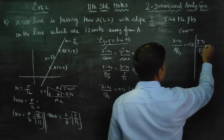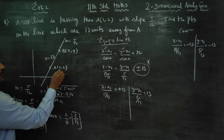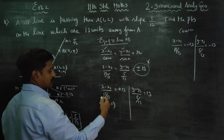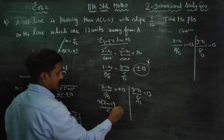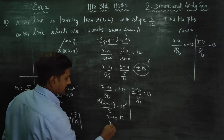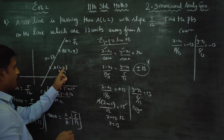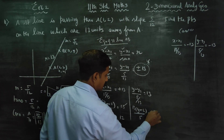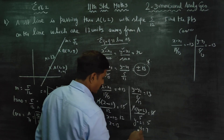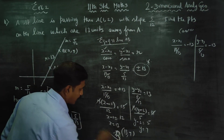Case 1: x minus x1 by 12/13 equals plus 13. Cross multiplying, x minus 1 equals 12, so x equals 13. For y: y minus y1 by 5/13 equals plus 13. Cross multiplying, y minus 2 equals 5, so y equals 7. The first point B is (13, 7).